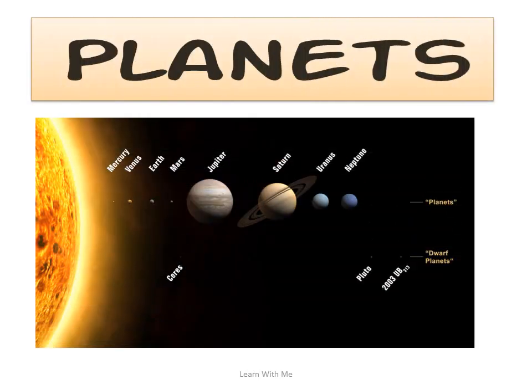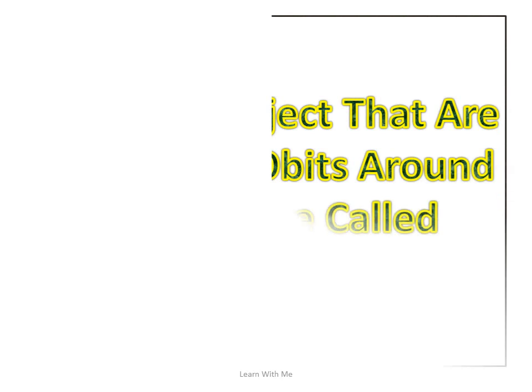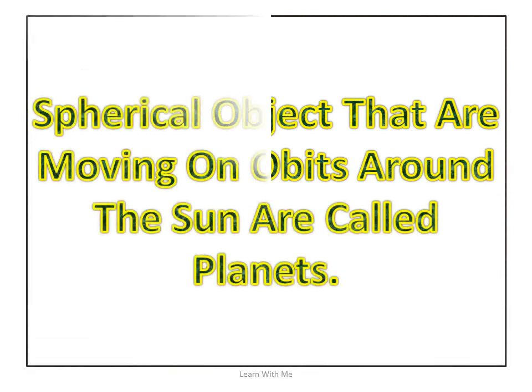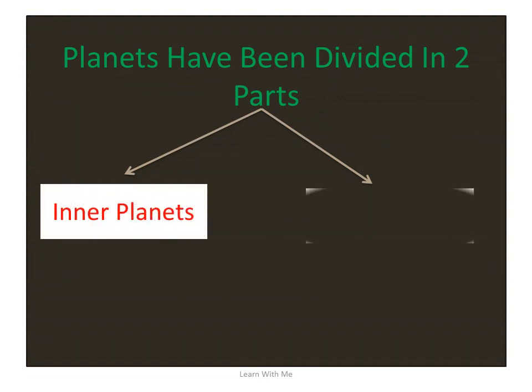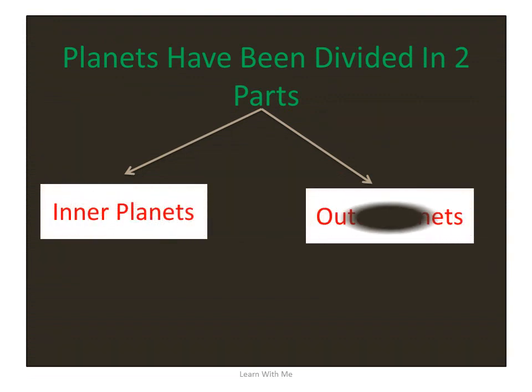Now we discuss about the planets. What is meant by planets? Spherical objects that are moving on orbits around the Sun are called planets. Planets have been divided into two parts: inner planets and outer planets.